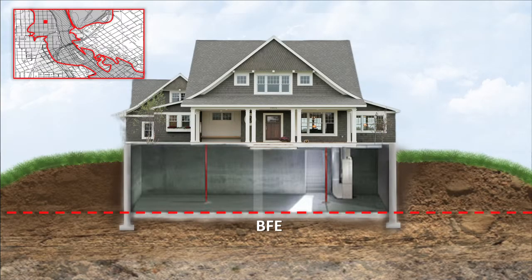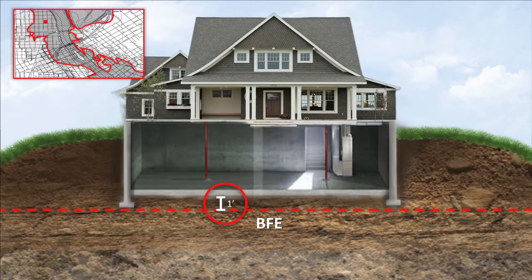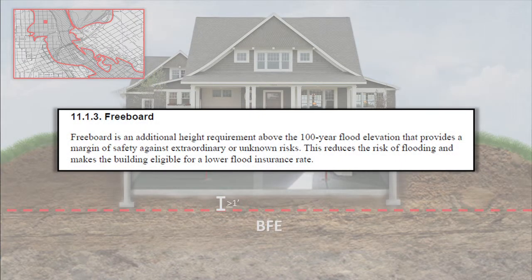The NFIP only requires the lowest floor of a residential building to be elevated to the base flood elevation. A state or community may adopt regulations that require buildings to be elevated to some level above the base flood elevation. This additional elevation is known as freeboard, which is defined by the NFIP as a safety factor above a flood level for floodplain management purposes.